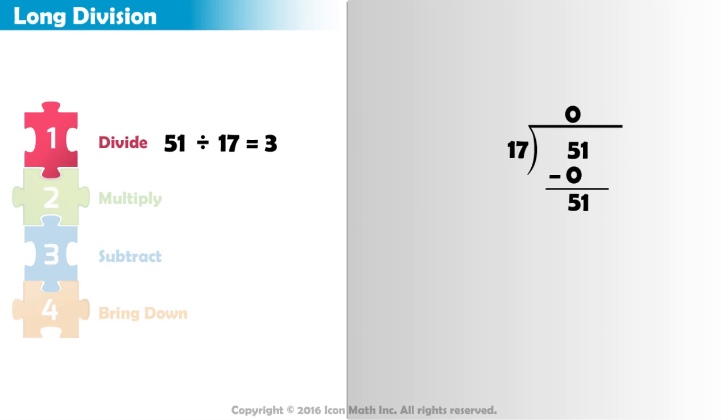Now that we've divided, we place the 3 in our quotient above the 1 from our dividend. Then we multiply, 3 times 17 equals 51.